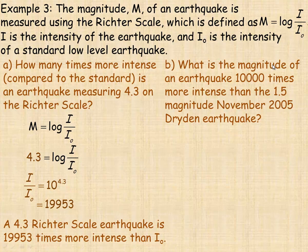Last example here asks, what's the magnitude of an earthquake that is 10,000 times more intense than the 1.5 magnitude November 2005 Dryden earthquake? So it had a Richter scale value reading of 1.5. So we have to figure out what the I over I₀ ratio is for this Dryden earthquake. So 1.5 is the Richter scale reading. So to solve for that one, for I over I₀, it would equal 10 to the power of 1.5.